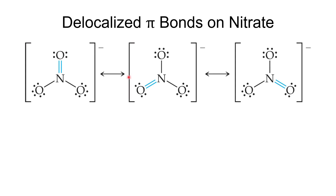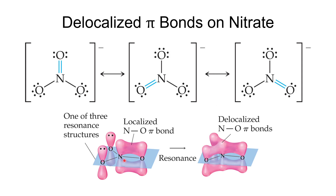We can represent delocalized electrons using pi bonds. The resonance structures for nitrate show a double bond between nitrogen and oxygen, but the average structure has about a bond order of one and a third between each nitrogen-oxygen pair. A localized pi bond could be drawn for one resonance structure, but in reality the pi bond is delocalized — the electron density is spread out over all four atoms.